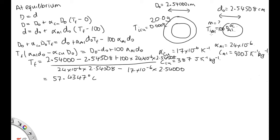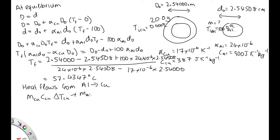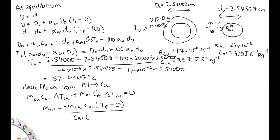Now we need to work out the mass. Heat flows from the aluminum to the copper, so the total heat flow for the system is zero — there's no overall heat flow into or out of the system. So we have: mass of copper times heat capacity of copper times change in temperature of copper, plus mass of aluminum times heat capacity of aluminum times change in temperature of aluminum, equals zero. Solving for the mass of aluminum: m_Al equals negative m_copper times c_copper times Tf (starting from 0), over c_aluminium times (Tf minus 100).